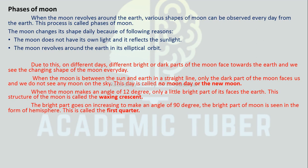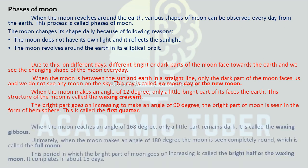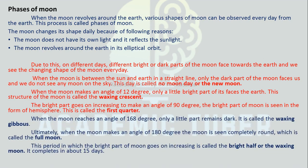When the Moon makes an angle of 12 degrees, only a little bright part faces the Earth — this is called the Waxing Crescent. The bright part goes on increasing. At 90 degrees, the bright part of the Moon is seen in the form of a hemisphere — this is called the First Quarter. When the Moon reaches an angle of 168 degrees, only a little part remains dark — this is called Waxing Gibbous. When the Moon makes an angle of 180 degrees, the Moon is seen completely round, which is called the Full Moon. This period in which the bright part of the Moon goes on increasing is called the bright half or Waxing Moon, and it completes in about 15 days.